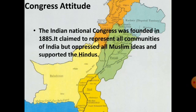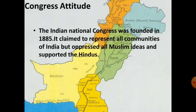The Indian National Congress was formed in 1885. With the passage of time, the Congress started claiming to represent all of India but in reality supported Hindus instead of Muslims, leaving Muslims behind.